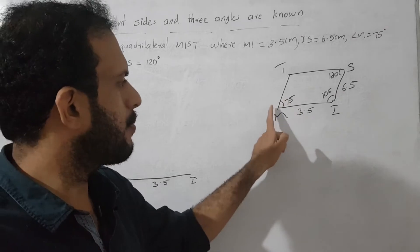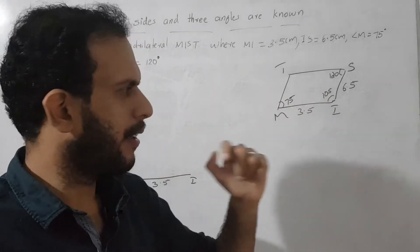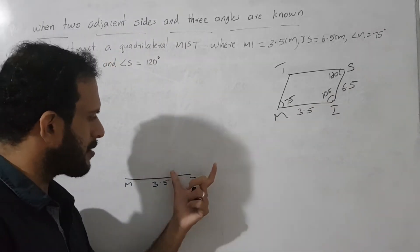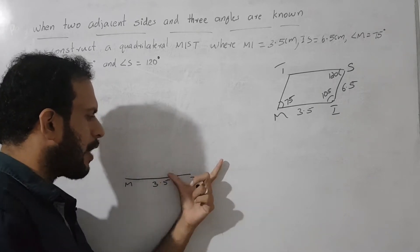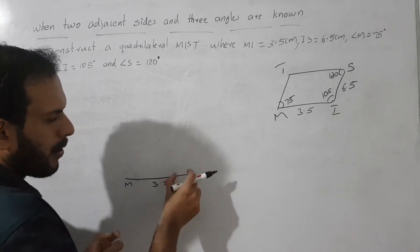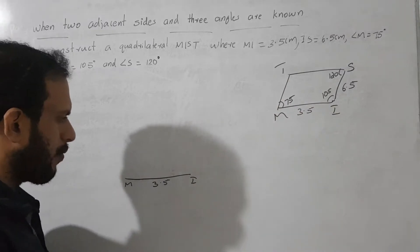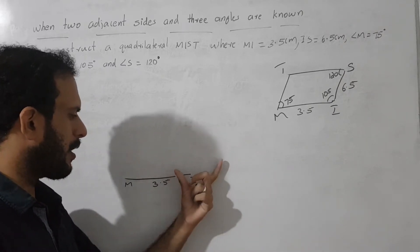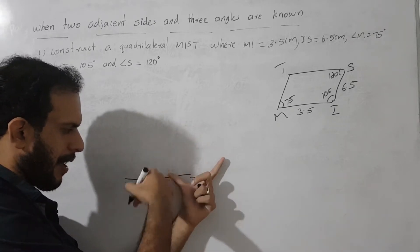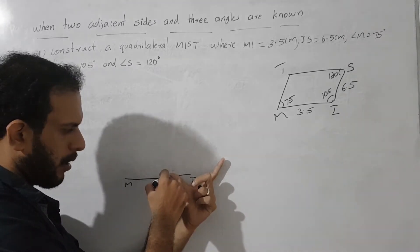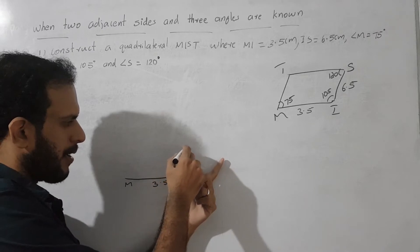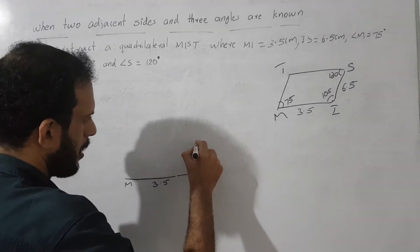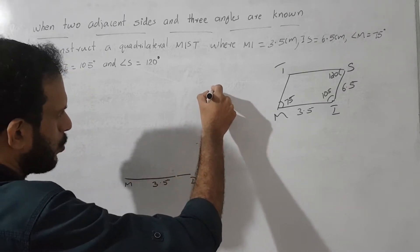We have the 2 angles at the endpoints M and I, and we know the side measurement of IS. Next, we construct the angle value of 105°. We keep the protractor with the middle on point I, where 0 lies on the line. We mark 105° and draw a line through that point.